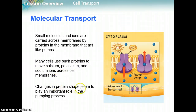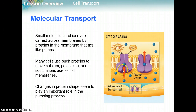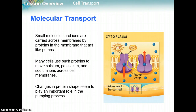Changes in protein shape seem to play an important role in this pumping process. What we see here is that for some sort of process, there is a small amount of these ions on the top side and more ions inside the cell. Some sort of process needs these ions to be pumped across from a high concentration to a low concentration, which is against the gradient — so this is not what the cell naturally wants to do.